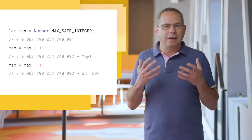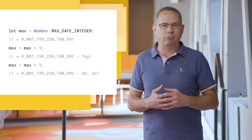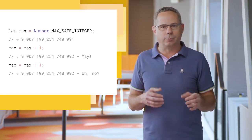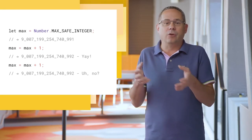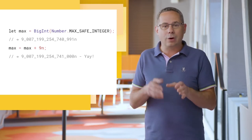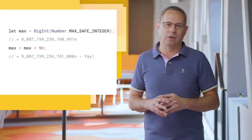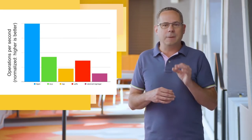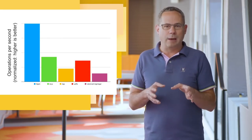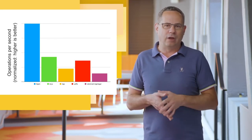BigInts are a numeric primitive in JavaScript that can represent integers with arbitrary precision. Large integer IDs and high-accuracy timestamps can't be safely represented as numbers in JavaScript, which often leads to real-world bugs, because we end up representing them as strings instead. With BigInts, we can safely store and perform integer arithmetic without overflowing. Today, dealing with these large integers typically means that we have to resort to a library that would emulate BigInt-like functionality.